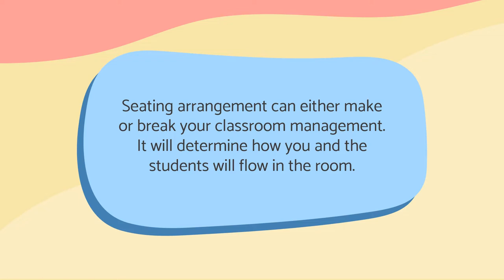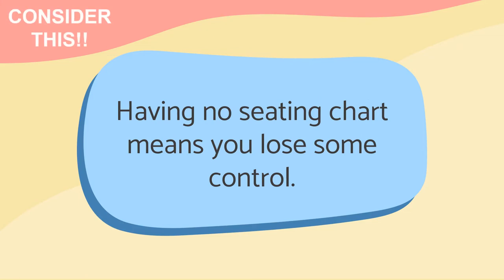Seating arrangement can either make or break your classroom management. The design and flow of your classroom plays a critical role in setting up your routines and procedures during the first weeks of school. A poor design can be detrimental to your classroom management plan. Consider this: having no seating chart means you lose some control. A seating chart is a powerful tool for learning names. It also helps manage noise and student engagement if students are properly placed around the room in advance.